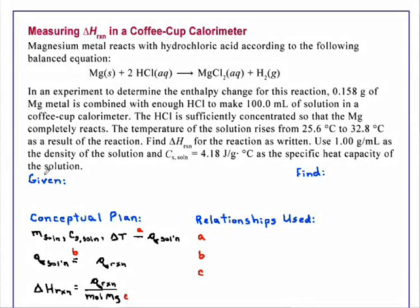Measuring delta H of reaction in a coffee cup calorimeter. Magnesium metal reacts with hydrochloric acid according to the following balanced equation: Mg solid plus 2HCl aqueous yields MgCl2 aqueous plus H2 gaseous.